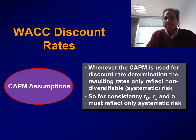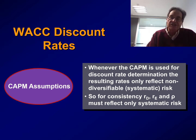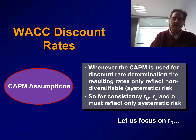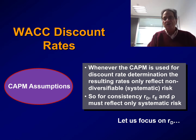Whenever the Capital Asset Pricing Model is used for discount rate determination, the resulting rates only reflect non-diversified or systematic risk. That is, if we calculate RE, RD, and also rho using the Capital Asset Pricing Model, all of these rates will be consistent with each other because all of them will reflect only systematic risk. Let's focus on RD, which is the problem part — it is usually assumed equal to the market cost of debt and not calculated using the CAPM.